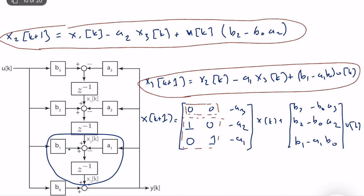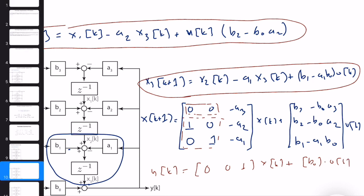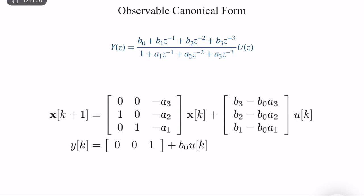To finalize, we need the complete output equation. The output equation for observable canonical form is very easy because we already computed that y(k) is equal to b0*u(k) plus x3(k). So we can write it as: C = [0, 0, 1] times x(k) plus b0 times u(k). So if I look at the final structure, this is the observable canonical form, and I already explained the details.